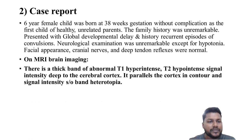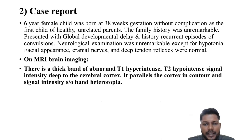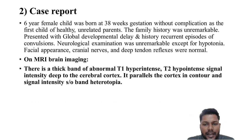Case report. A six-year-old female child was born at the 38th week of gestation without complication as the first child of healthy unrelated parents. Family history was unremarkable. She presented with global developmental delay and history of recurrent episodes of convulsion. Neurological examination was unremarkable except for hypotonia. Facial appearance, cranial nerves, and deep tendon reflexes were normal.